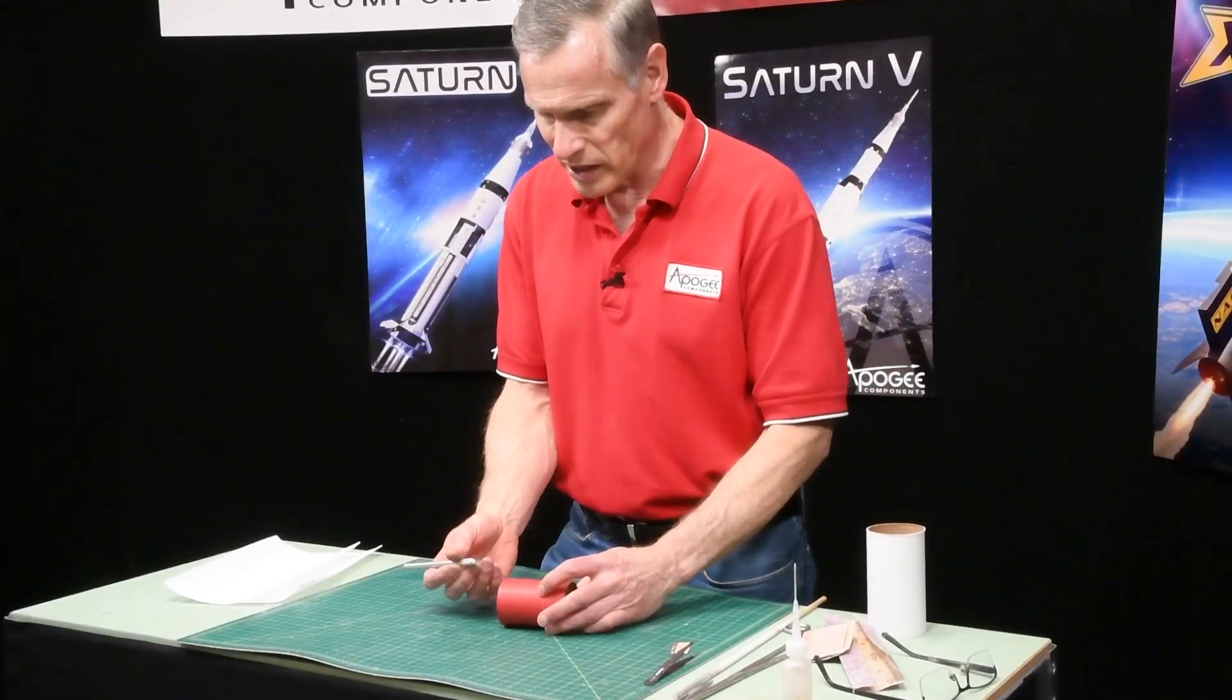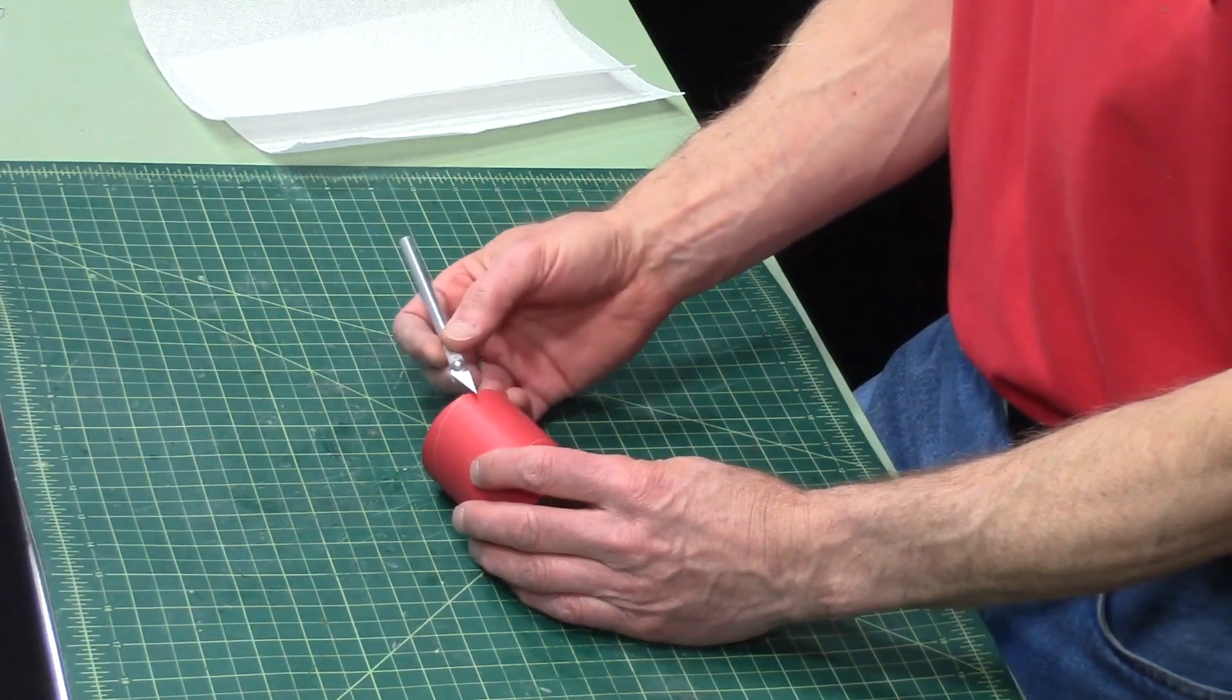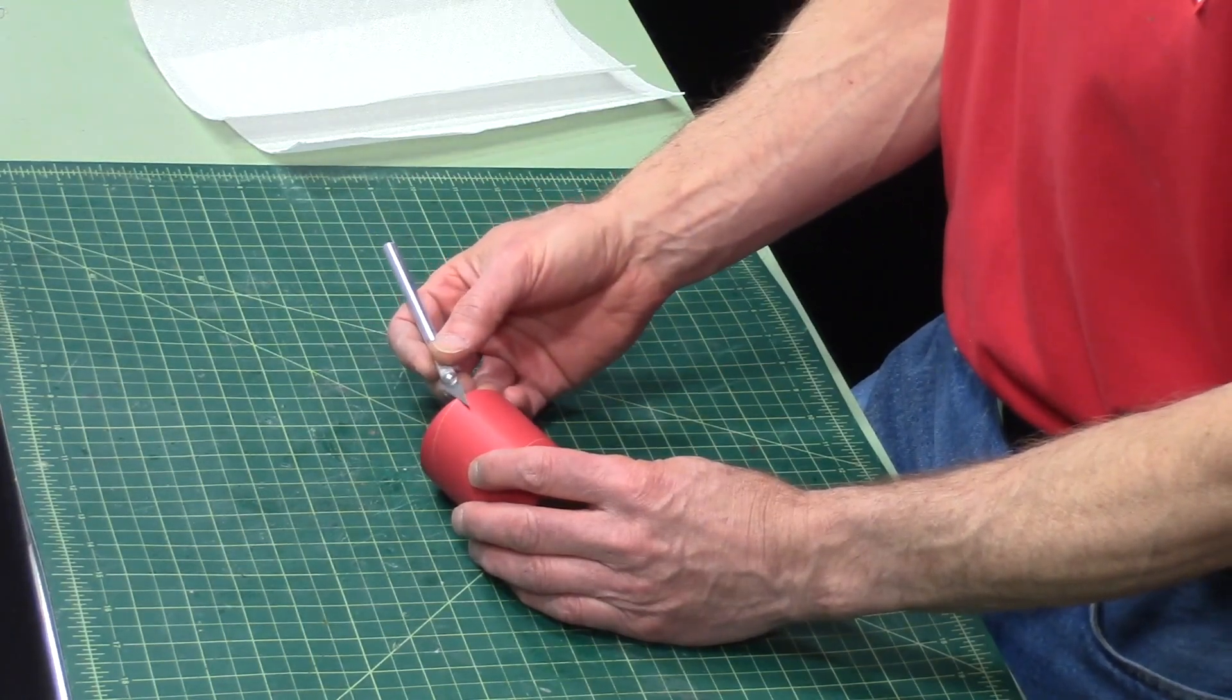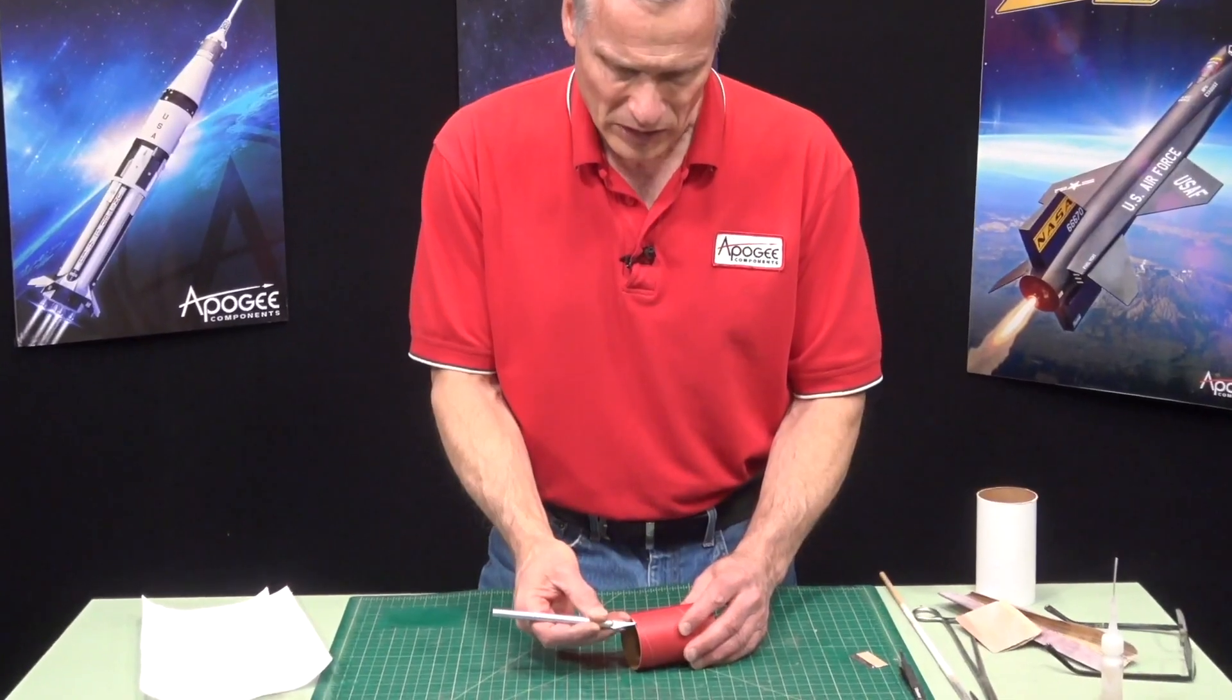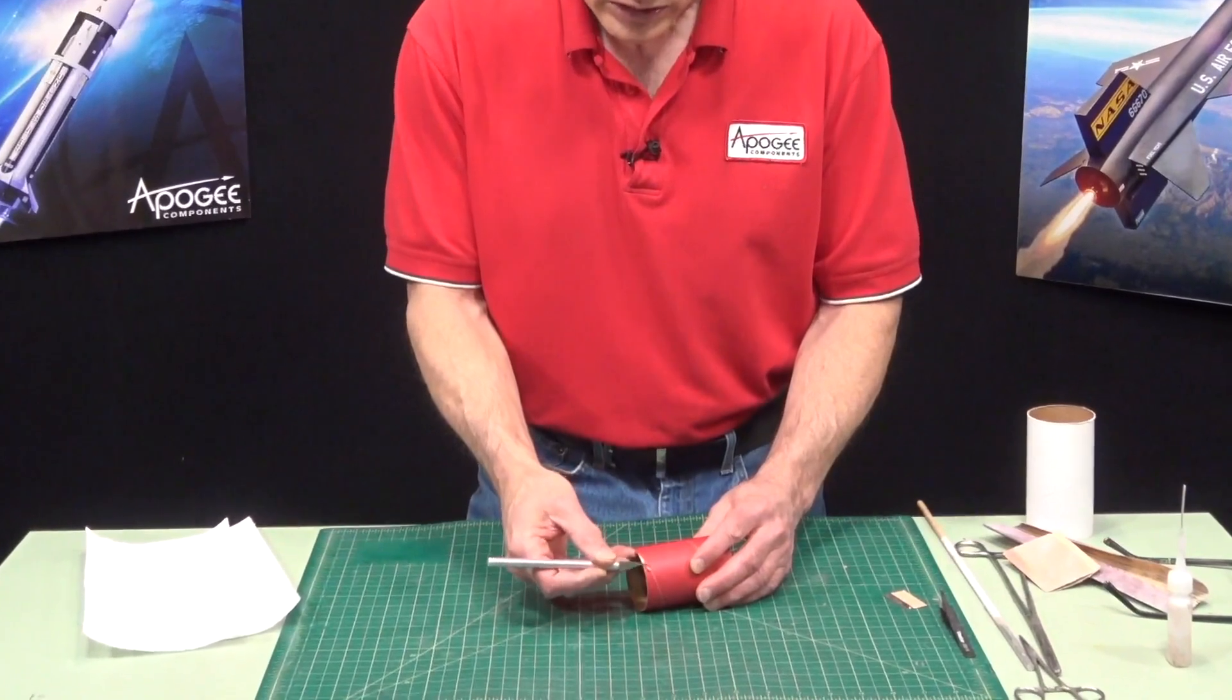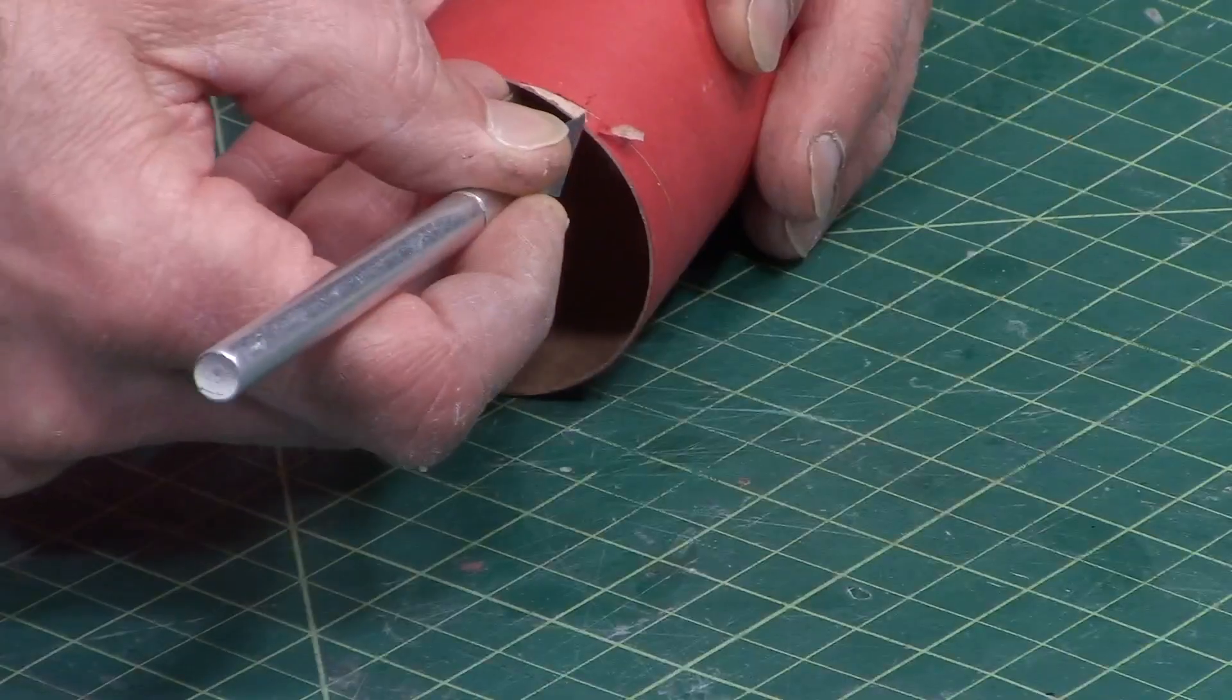So I'm going to take a hobby knife here and I'm going to come in at an angle almost parallel to it because I don't want to gouge it. I just want to find that edge like that. I can kind of peel it back a little bit. I'm not getting it quite yet.